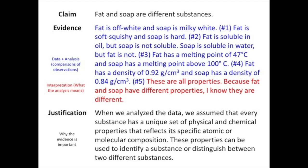Here's ADI's CEJ framework. We see the original reasoning in red is now part of our evidence, because this is what we call an interpretation — explaining what the analysis means. And take a look at the justification. Students are now tying in what they did to the bigger scientific principles, recognizing that each substance has a unique set of physical and chemical properties.